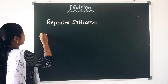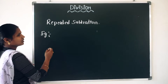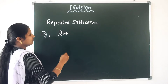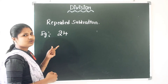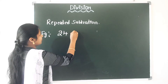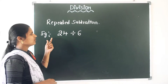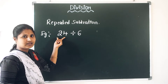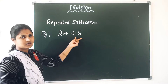So I am writing one example. I have 24 mangoes. I want to divide these 24 mangoes among 6 children — so I want to distribute these 24 mangoes equally among 6 children.